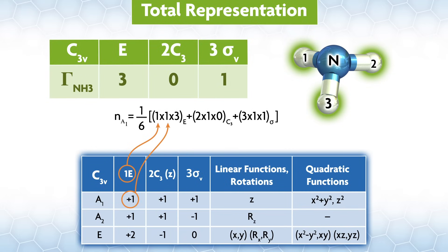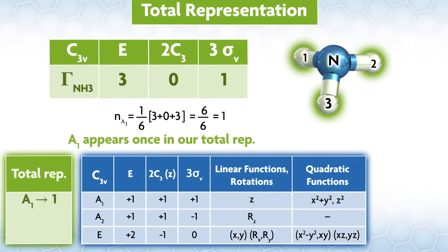The first chi is the character under a1 for that operation, which is plus one because it's the totally symmetric representation. Finally, chi t is the character under the class for our total rep. Our equation looks like this. On the parentheses, I'm putting the class just to help you keep track. As a result, we know that a1 appears once in our total rep.